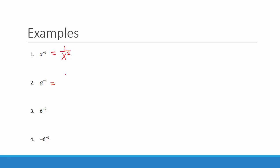a to the negative 4 is equal to 1 over a to the positive 4. 6 to the negative 2 is equal to 1 over 6 squared. We can simplify this because it is a number: 6 squared is 6 times 6, which is 36. So we get 1 over 36.